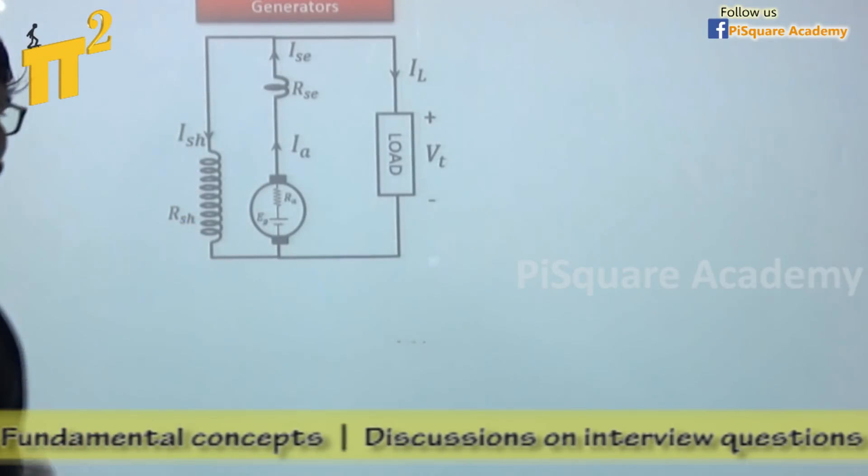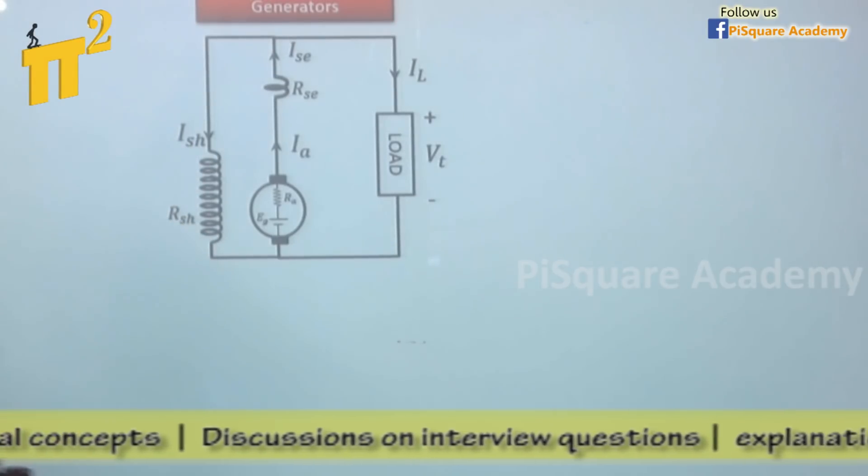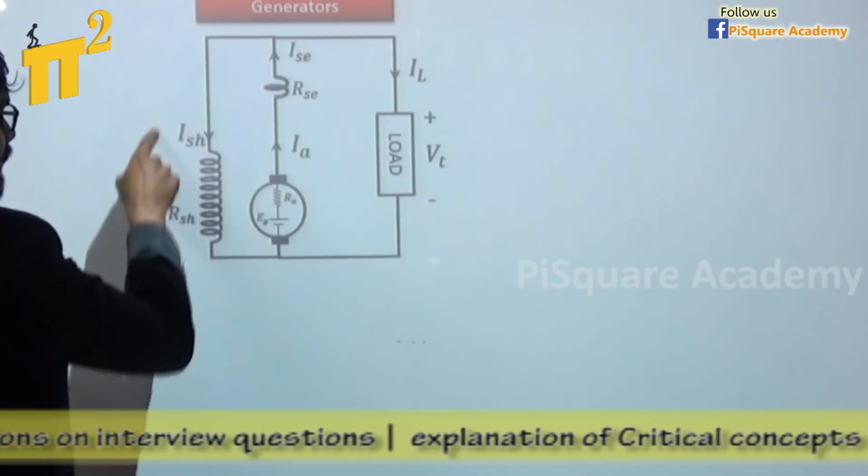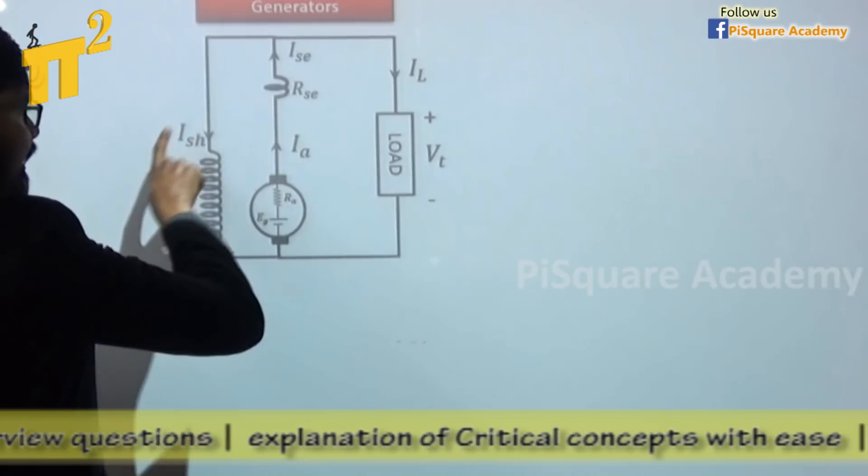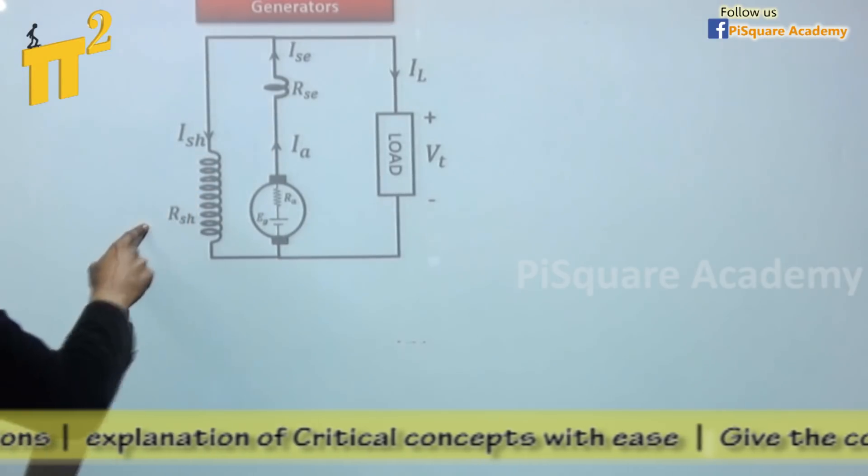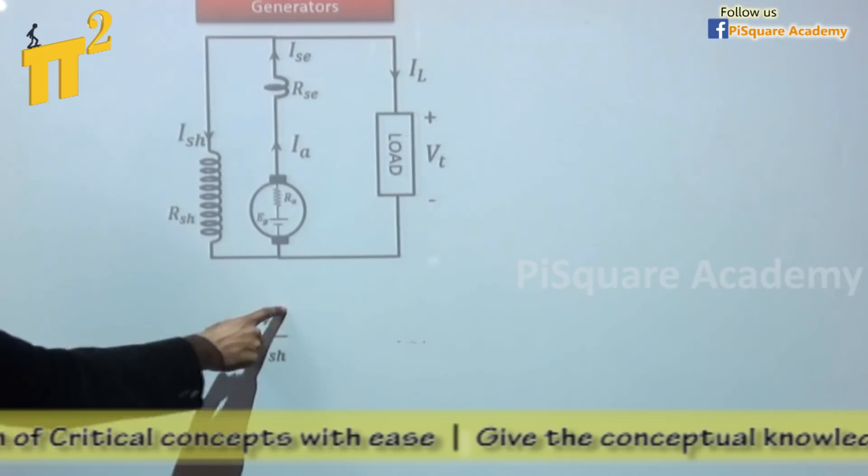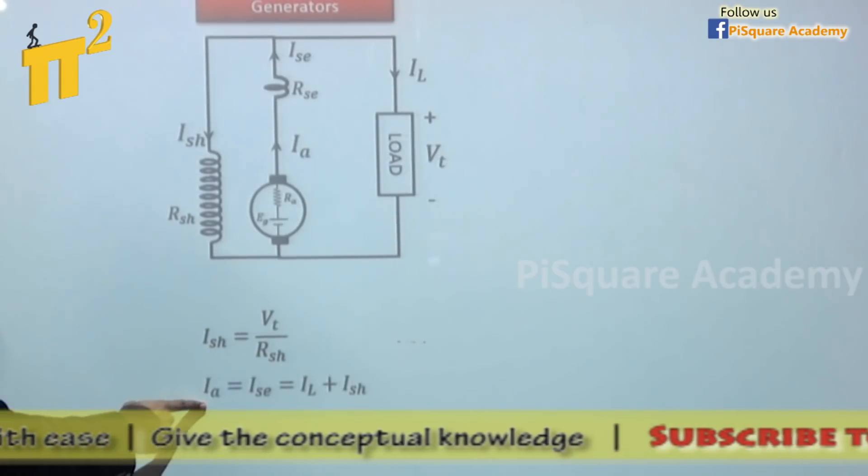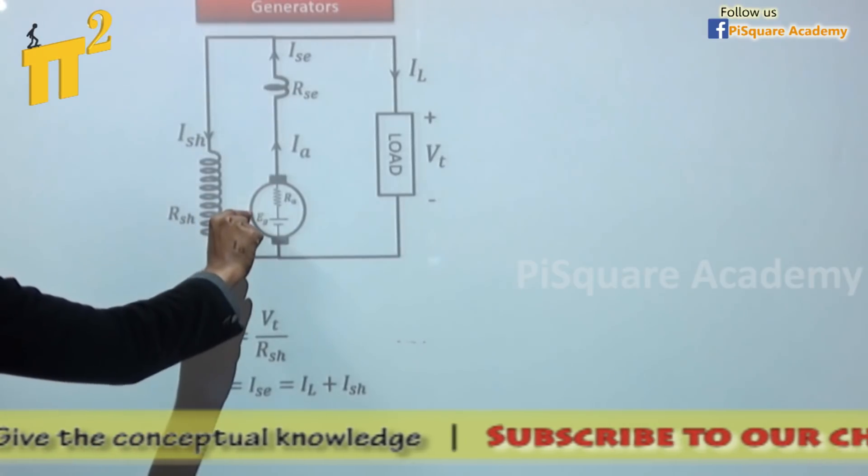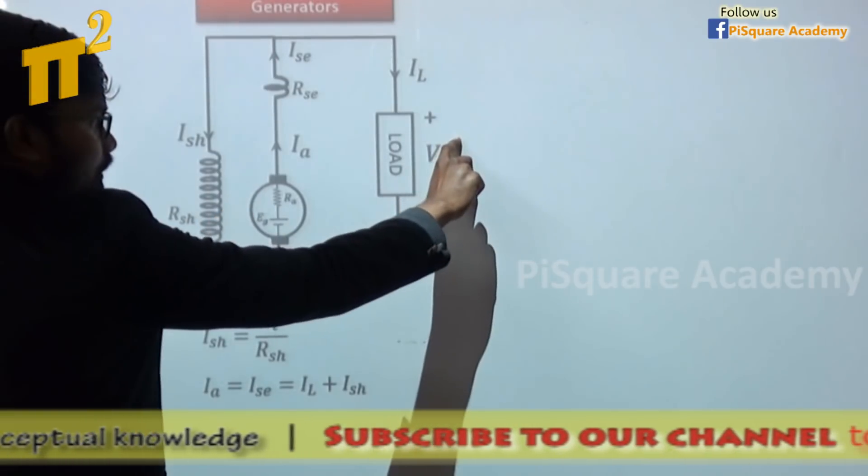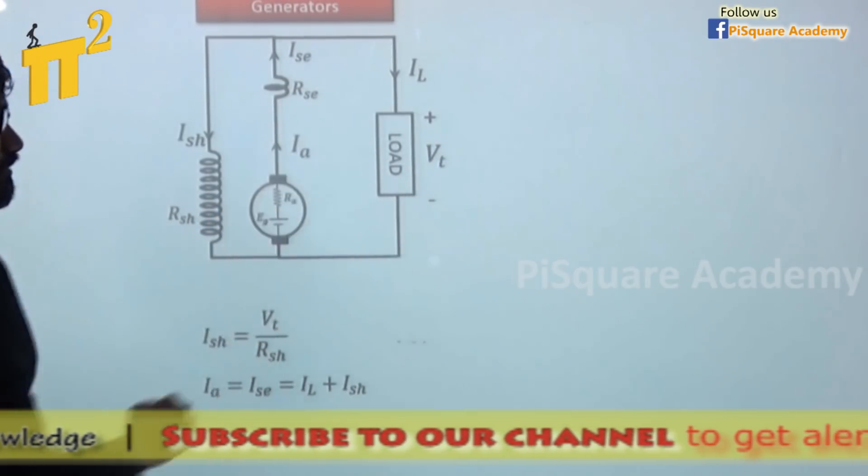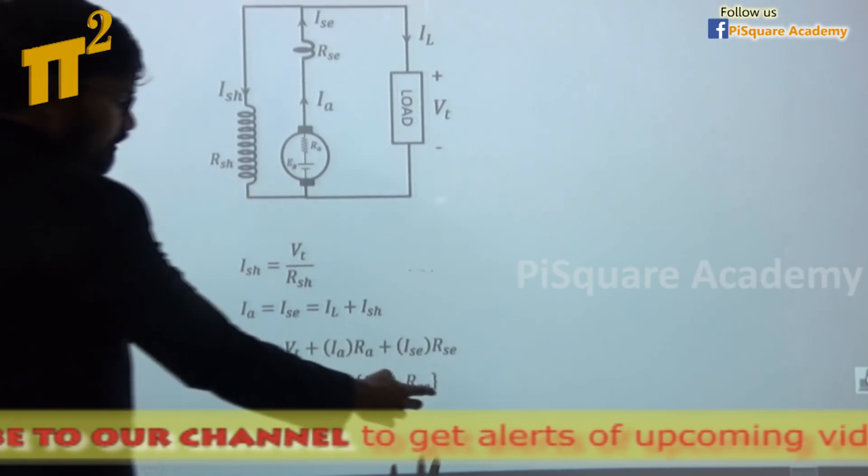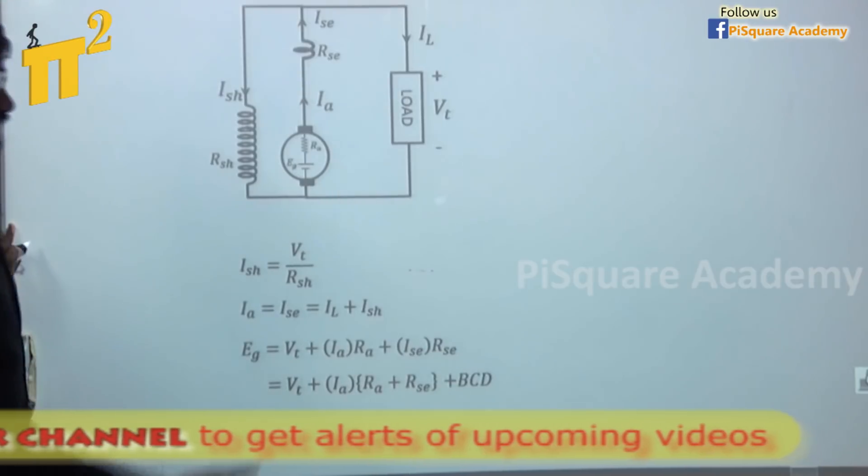And corresponding voltage and current equation - give a try. Here Ia is equal to Isc. Now what about Ish? Ia is equal to Isc plus Ish. That is shunt field is connected in parallel to the load. So Ish is equal to Vt by Rsh. Then current equation. Then Eg, Eg is equal to terminal voltage after certain drops. So if I include brush contact drop also, we will have another term. That's it. These are the voltage and currents which we already know.